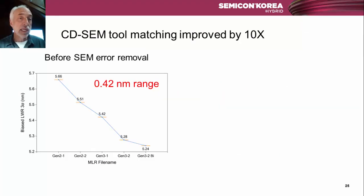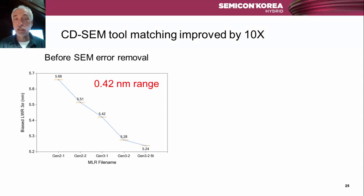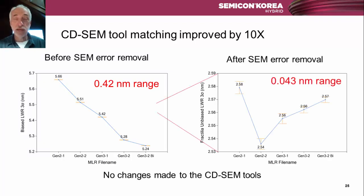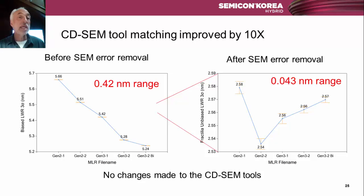What's the impact? The same wafer measured on six tools shows a range of 0.42 nm in the biased LWR. The variations in noise and systematic errors cause this large variation in measured LWR. But simply by taking those exact same images and measuring and subtracting out the errors, you can reduce that variability by a factor of 10 — with no changes made to the CD-SEM tools, only more careful image analysis. A 0.4 nm range — about 8% in the biased LWR — is too big to be useful for making decisions about which process is better; you'd end up making decisions based on which SEM the wafer was run on rather than which process produces lower roughness.